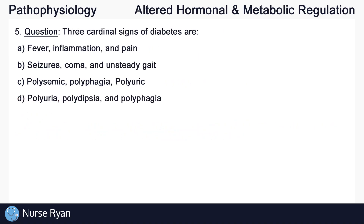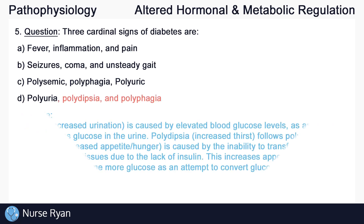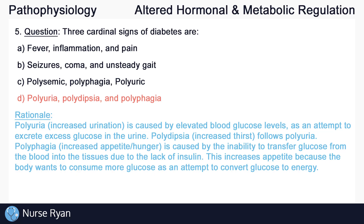Question number five: three cardinal signs of diabetes are? The answer is D, polyuria, polydipsia, and polyphagia.